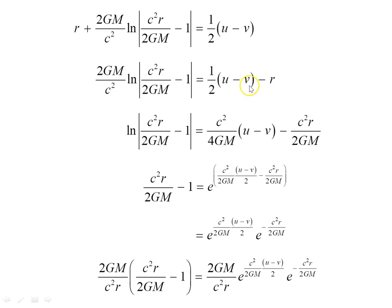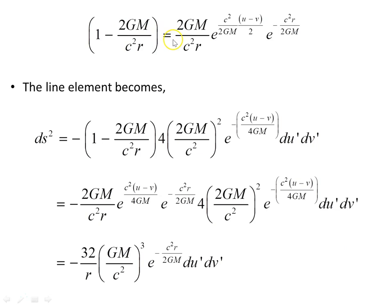Rearranging — subtracting r from both sides and multiplying through by c²/2GM — we exponentiate both sides to remove the log, leaving the argument on one side and exponentials on the other. Tidying up using the exponent laws and multiplying through by 2GM/c²r gives an expression for this factor. The line element then becomes ds² with this factor replaced by the negative of the exponential expression.